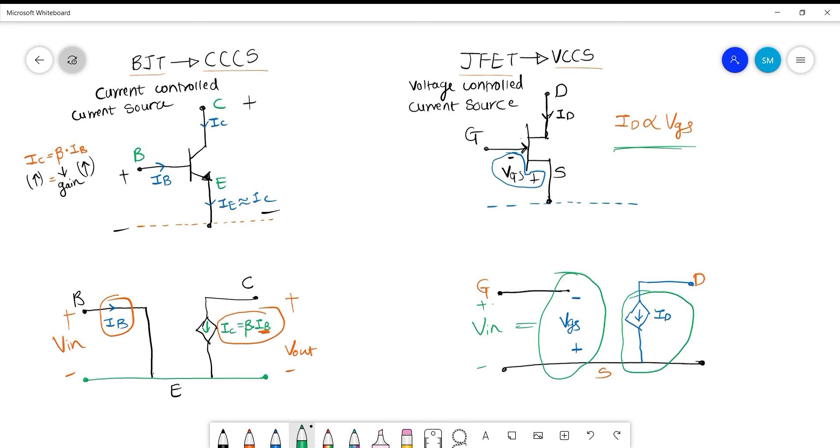Thus we can conclude that in BJT we saw that input current was controlling the output current, that's why we termed it as a current controlled current source. Similarly for JFET, our voltage is controlling the current at the output, that's why we termed it as a voltage controlled current source. I hope you understood this concept very well. Thank you.